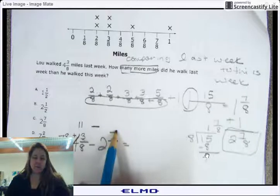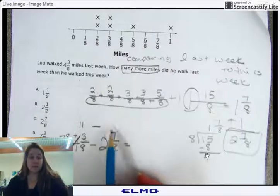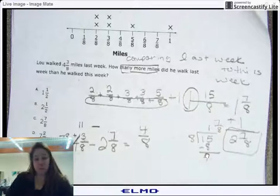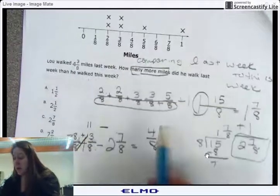So now I can subtract 11 minus 7. That's 11 minus 7, y'all. Eleven, ten, nine, eight, seven, six, five, four. You have 4/8, right? And then you take your whole number and you do three minus two equals one.